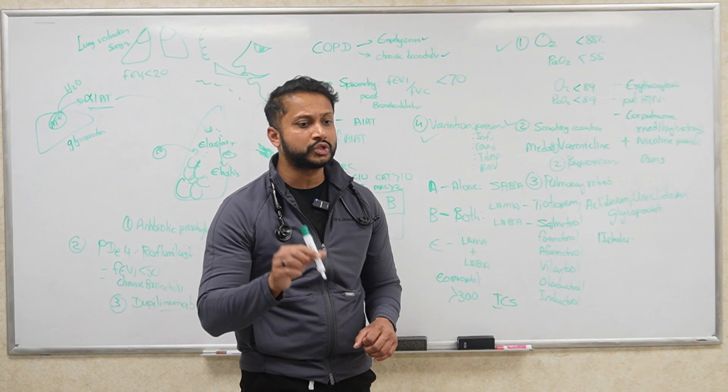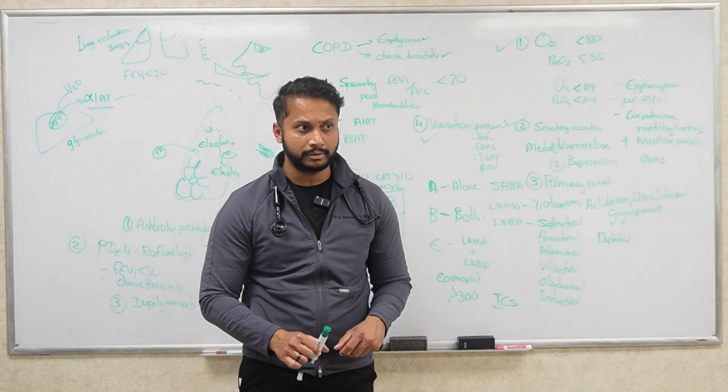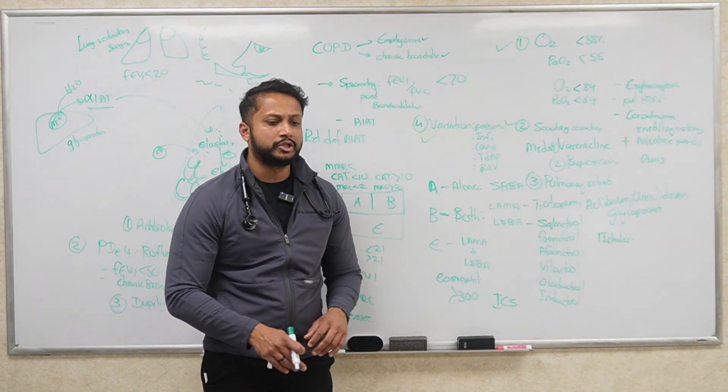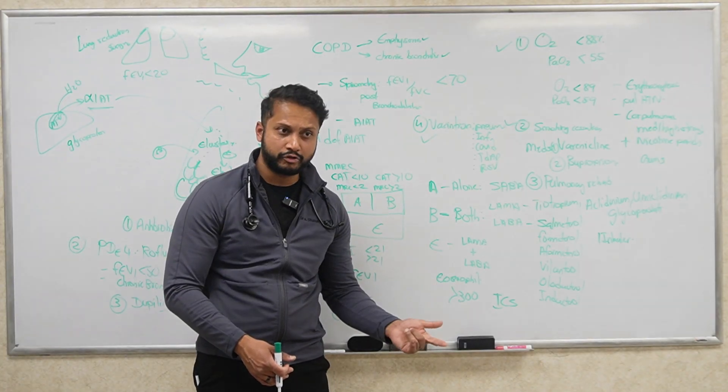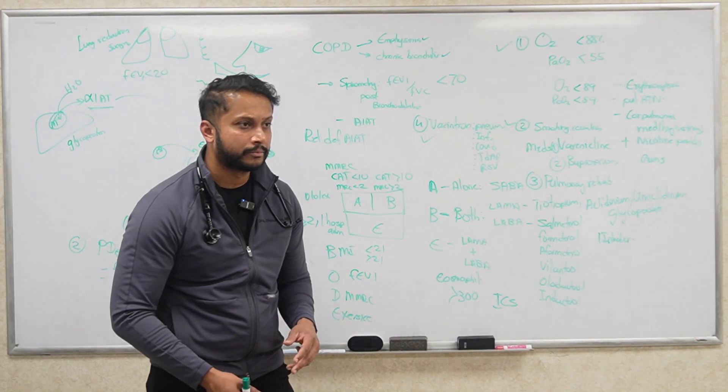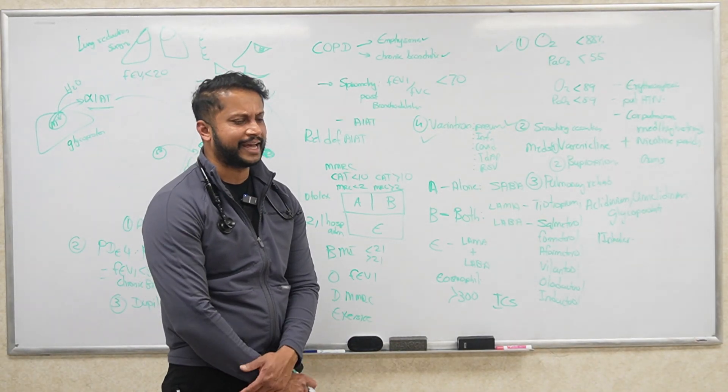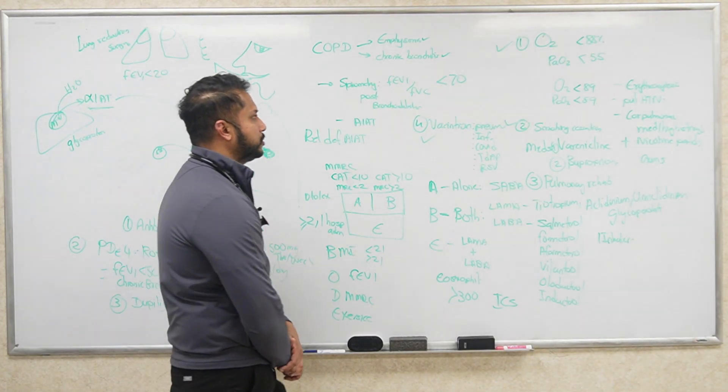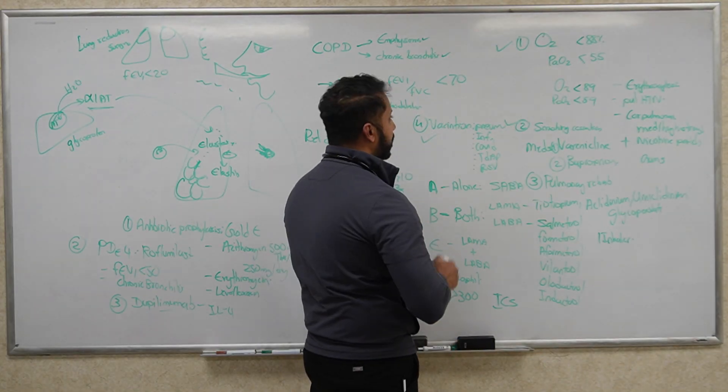When should you start the patient on antibiotics—that should be a question for the boards. What else are we going to do when somebody's got COPD in the hospital? Steroids, breathing treatments, antibiotics. Are we going to put them on oxygen? Yes, because most of them will be hypoxic. What is your oxygen target, short term or long term? What is the magic number you want to hit?